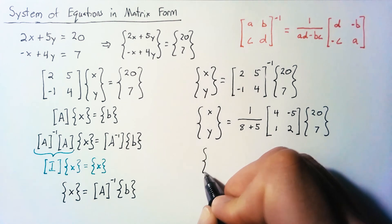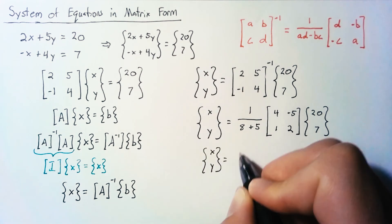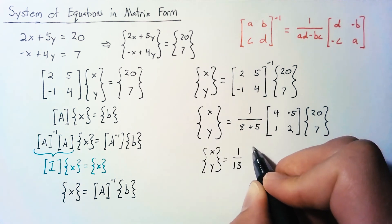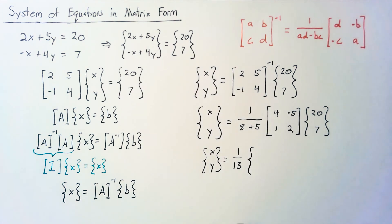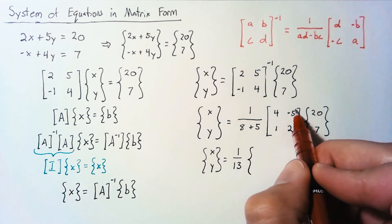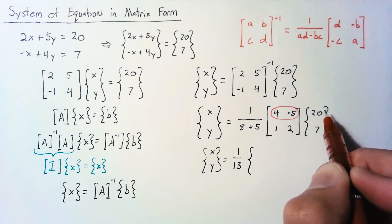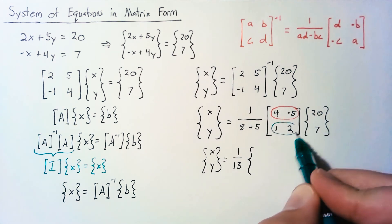So now what we can do is leave this 1 over 13 alone, but we're going to have a vector of two values which come from the first row multiplied by our column and our second row multiplied by our column.